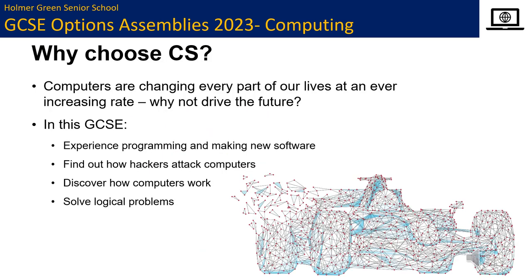Maths is included as GCSE computer science requires an ability to perform calculations. When you go on to do a degree course at top universities, maths will be one of the expected A-levels required. But computer science and programming are creative subjects that require novel ingenuity to solve problems. Most programmers in businesses are now working in teams, so the subject is far more sociable than many people think.